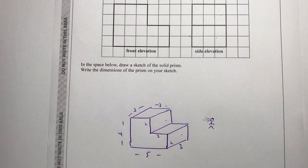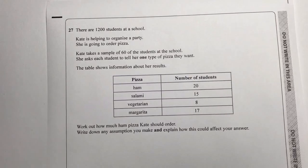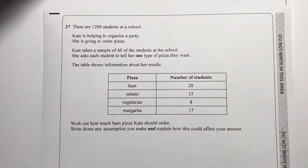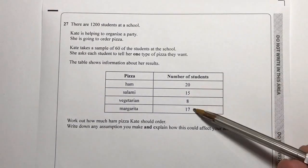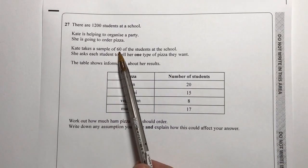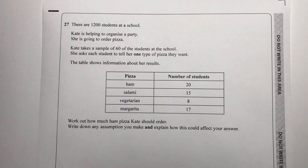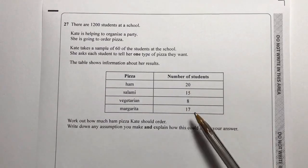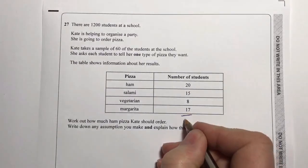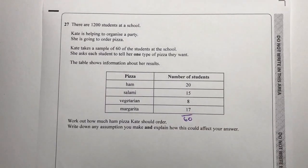Moving on to question 27, which uses the concept of stratified sampling. Stratified sampling means you sample a small number of people — in this case 60 people out of a whole school of 1200 — and whatever those 60 people decide is applied to the whole school. Let's check she did actually ask 60 people: adding up the numbers, they do add up to 60, so that's correct.